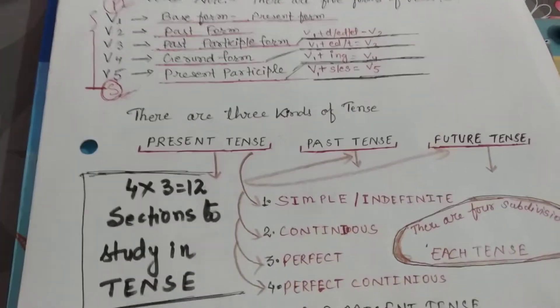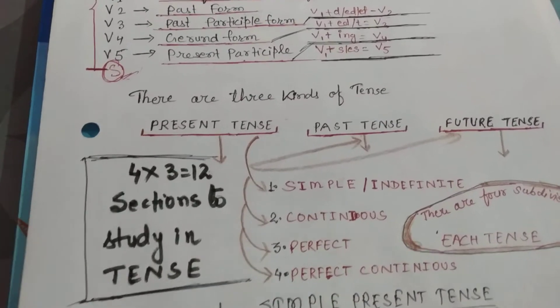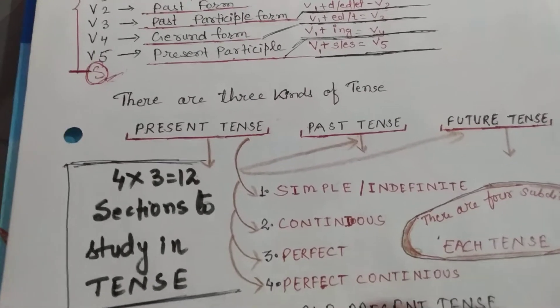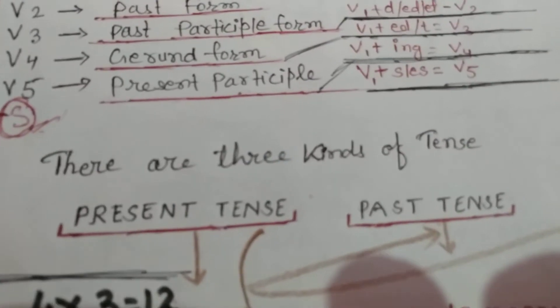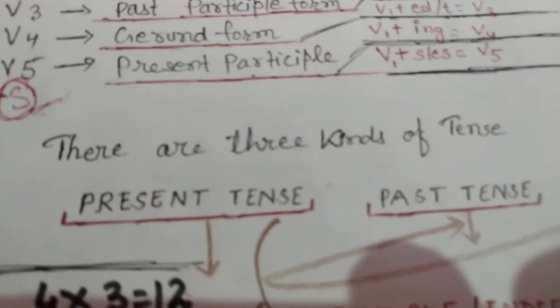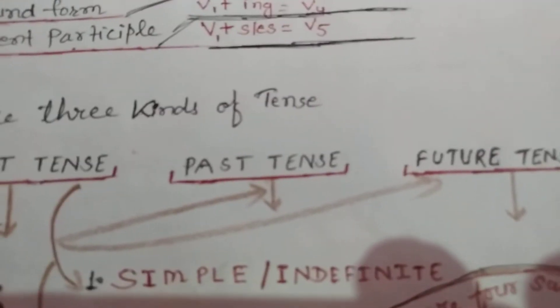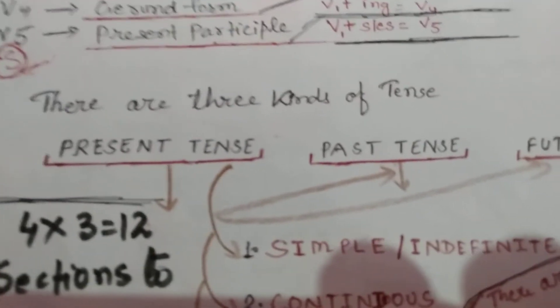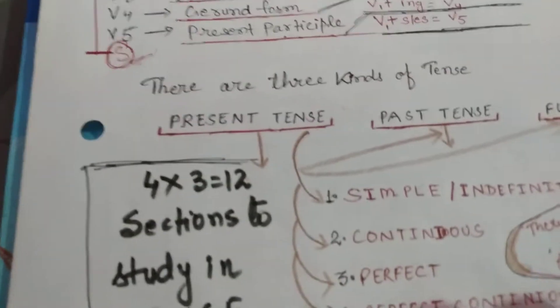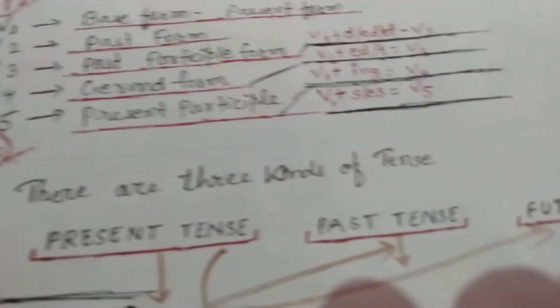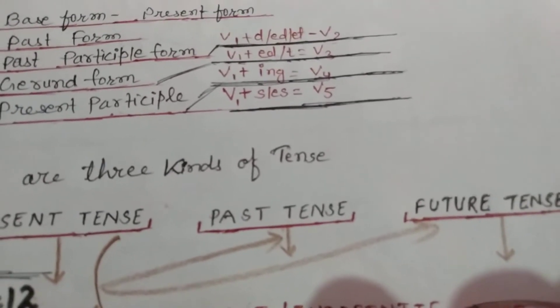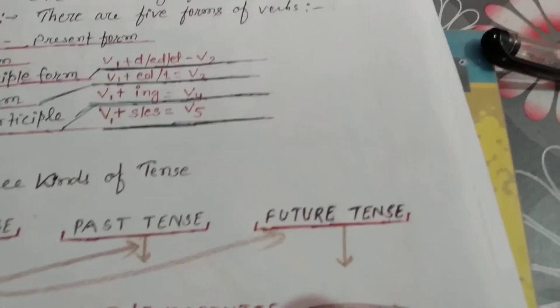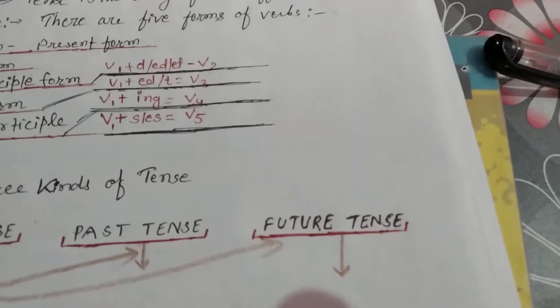There are three kinds of tense: present tense, past tense, and future tense. Present tense is related to the present time, past tense is related to past time, and future tense is related to actions which are going to happen in the coming time.